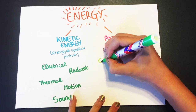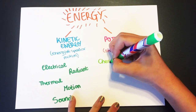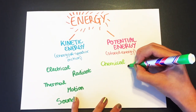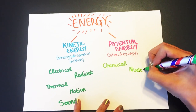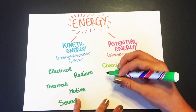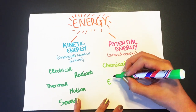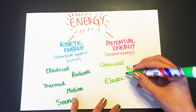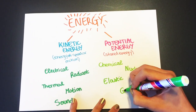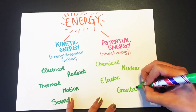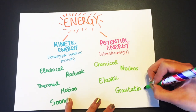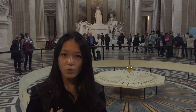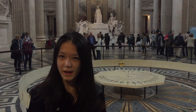The second category is potential energy, which is stored energy and energy of position. Under potential energy there's chemical energy (energy stored in the bonds of atoms or molecules), nuclear energy (the energy that holds together the nucleus of atoms), elastic energy (energy stored through the application of a force), and gravitational energy (the energy of a position or place).